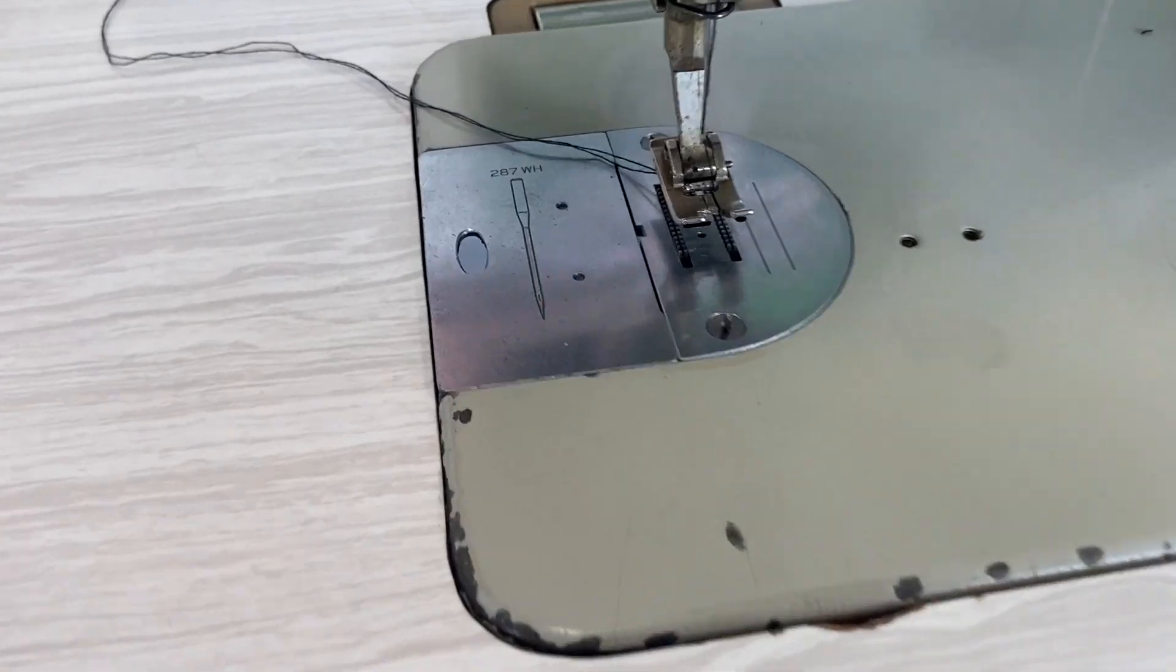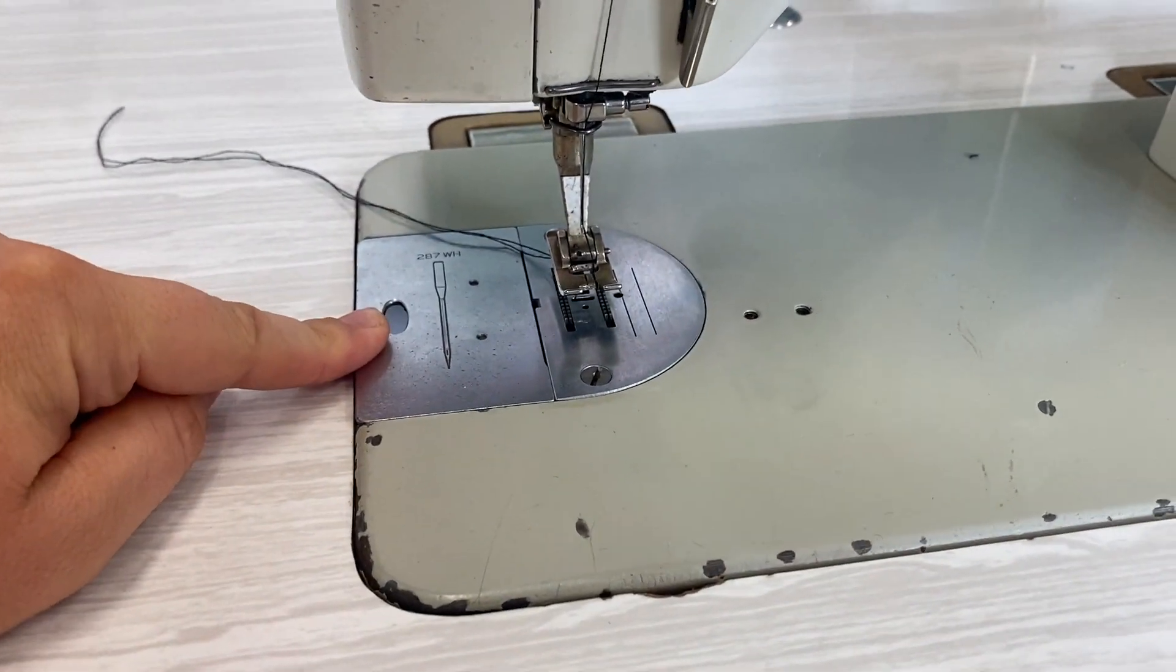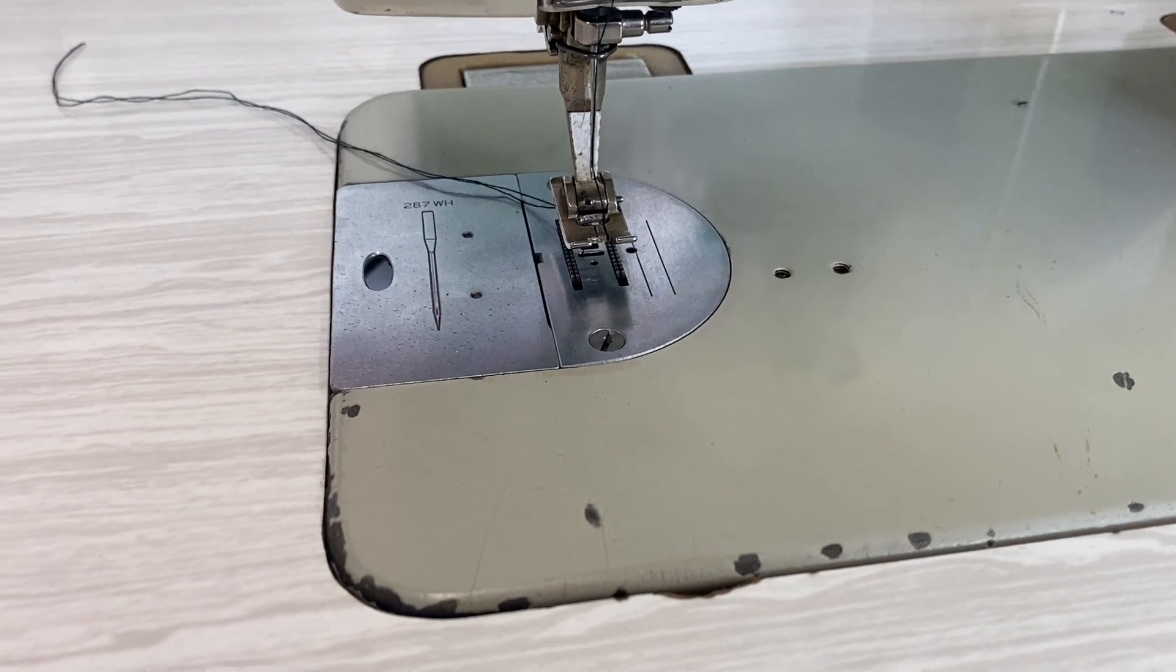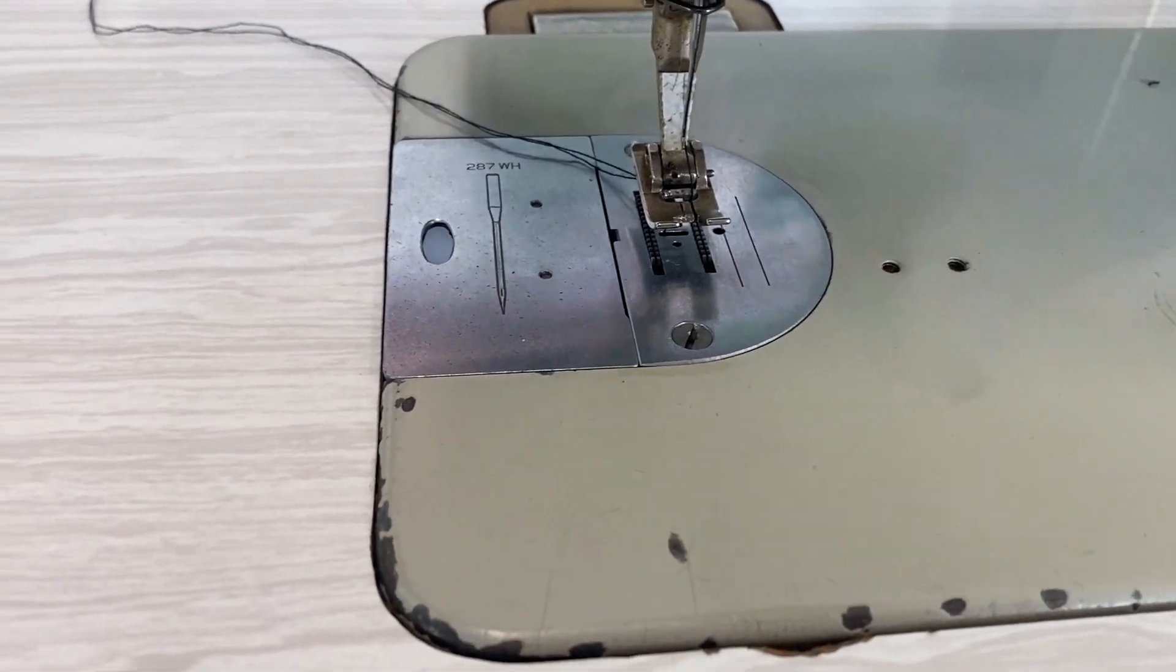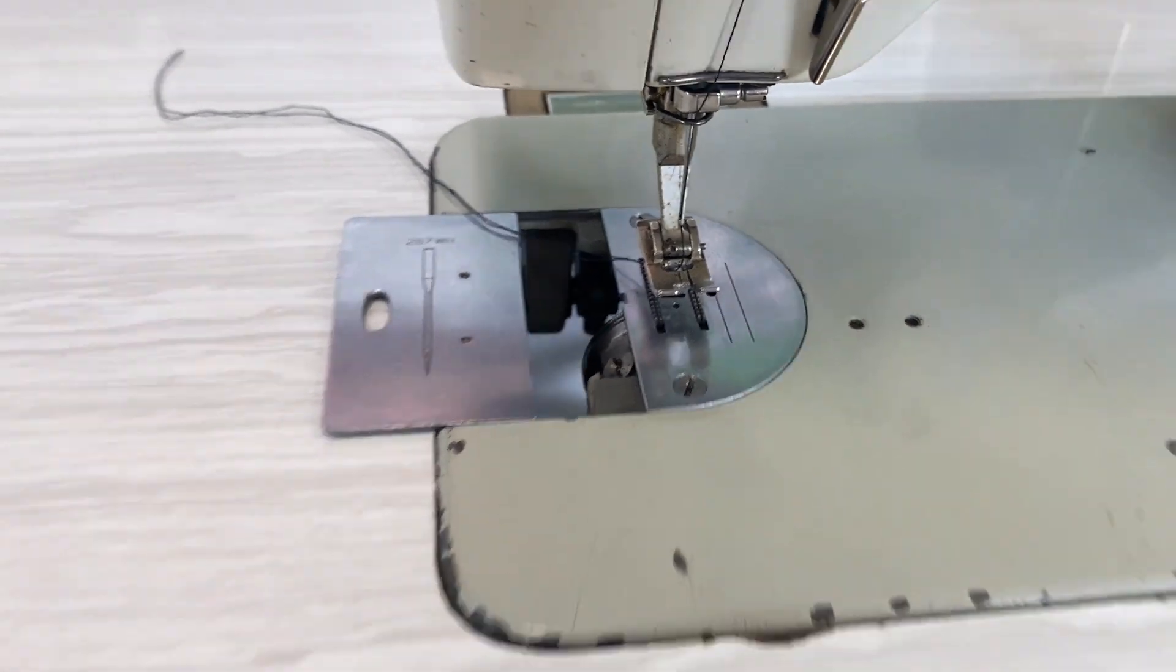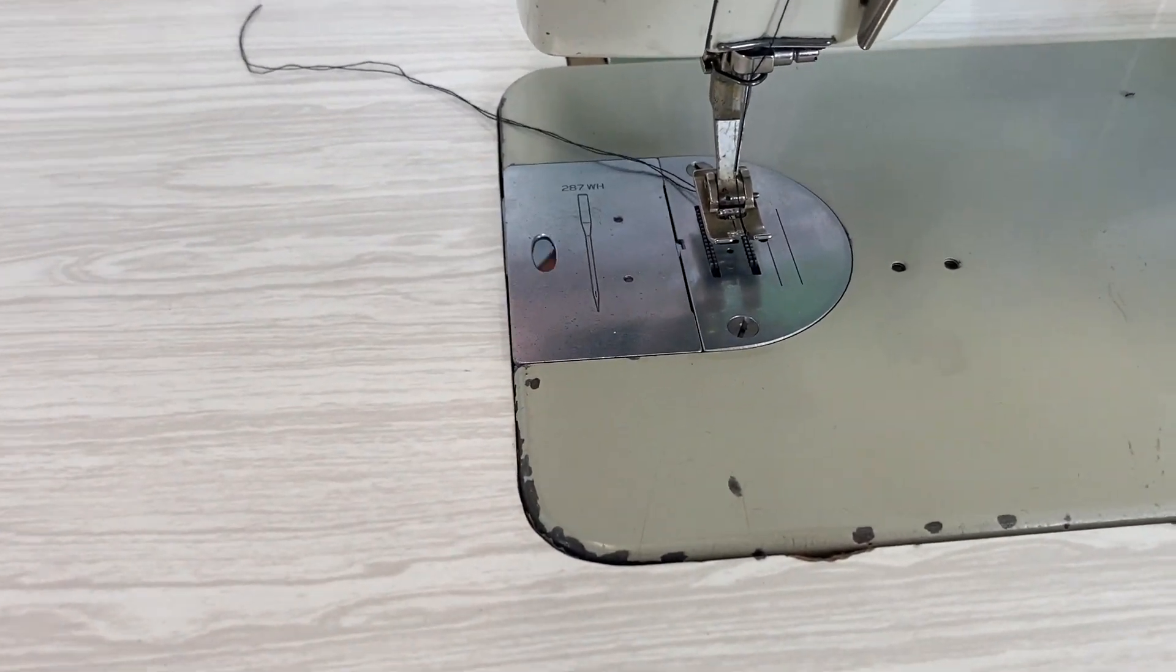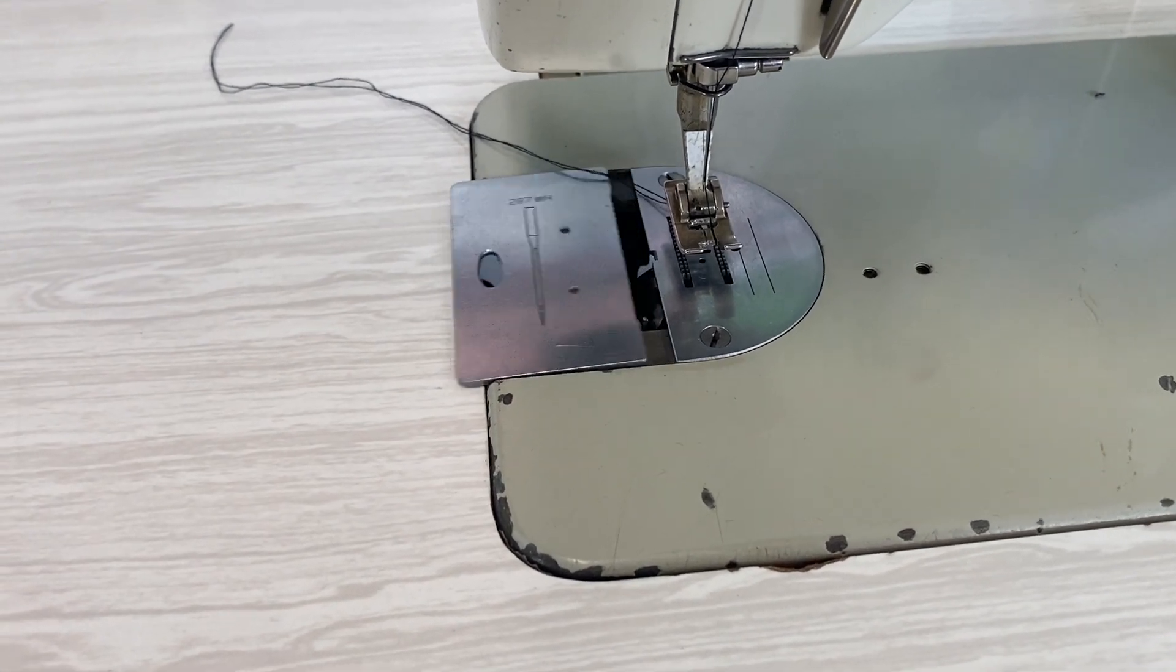To access the bobbin, you go through this plate here. Like other industrial machines, the bobbin sits underneath. Once you've practiced a bit, you can do this without opening the flap. I'm just putting my hand under the table and pushing it up and then along.